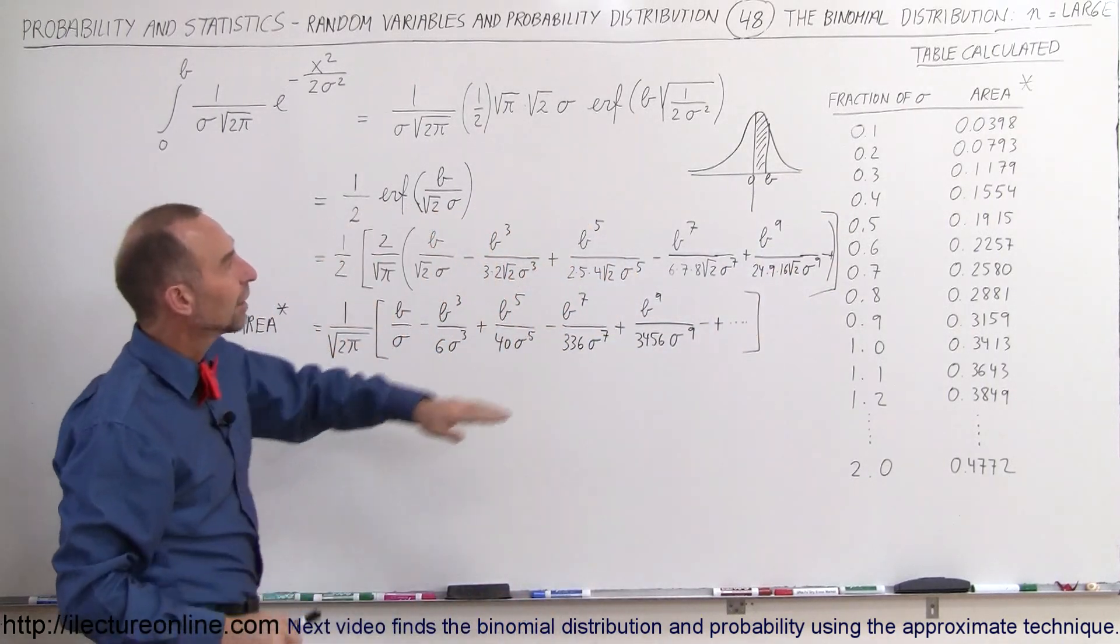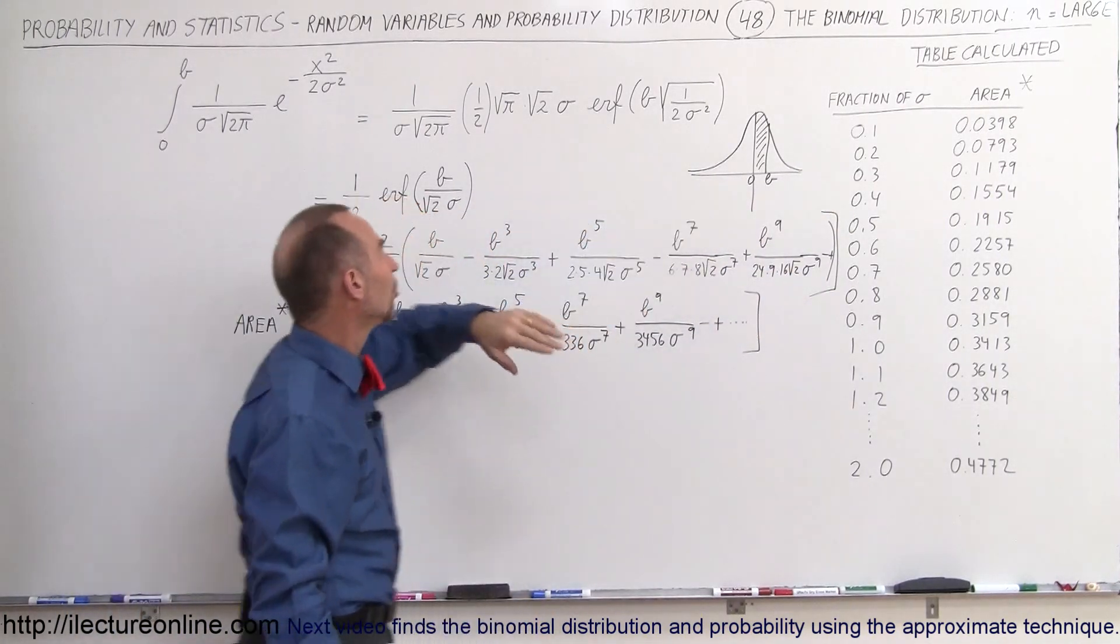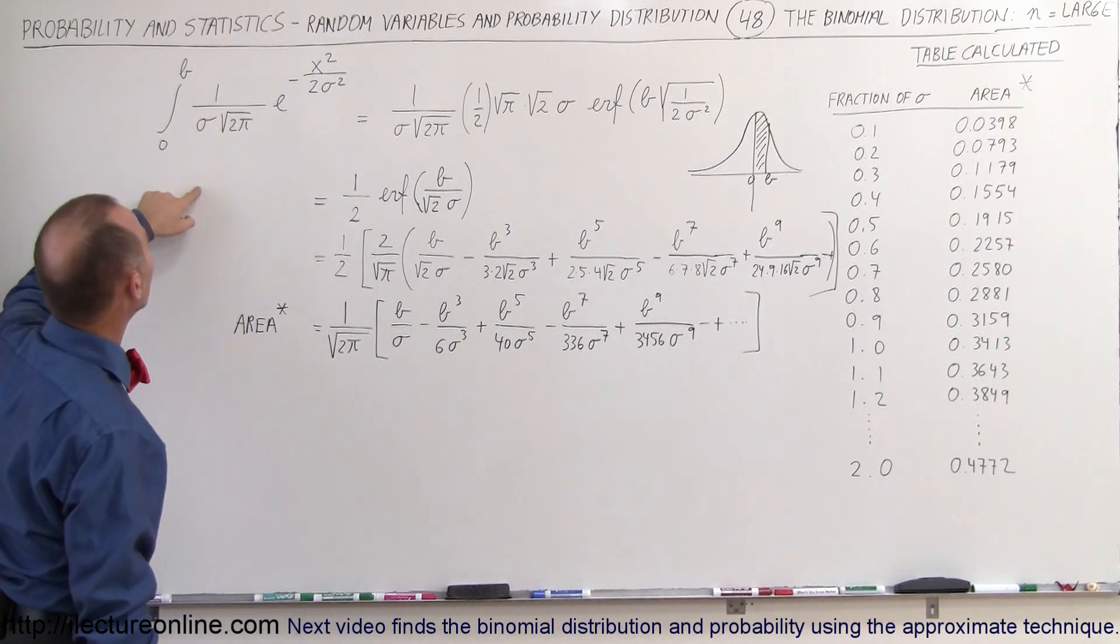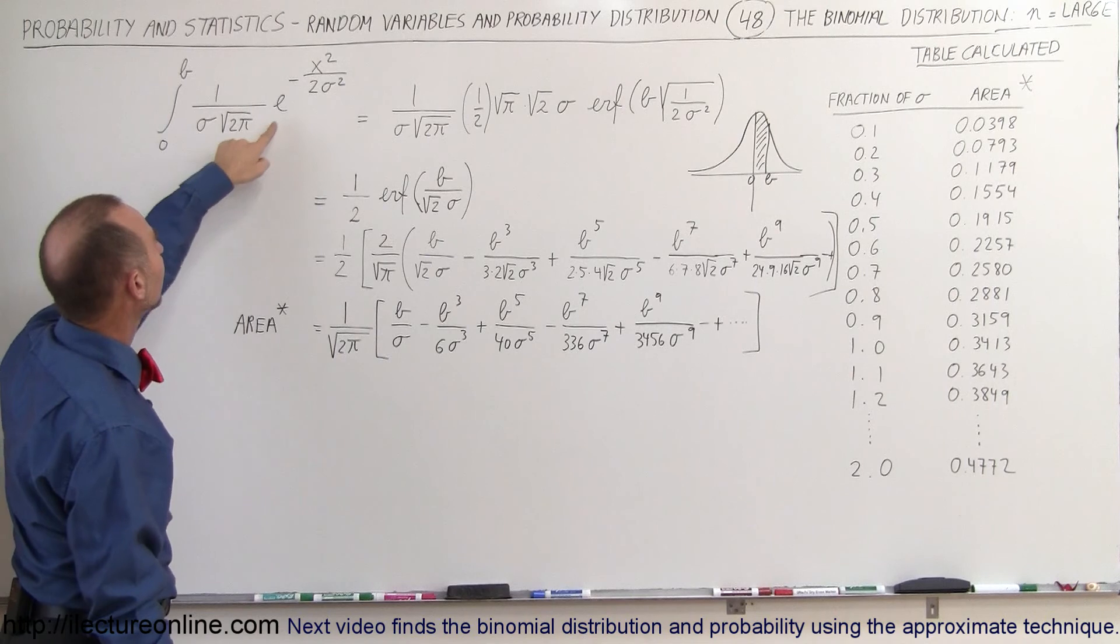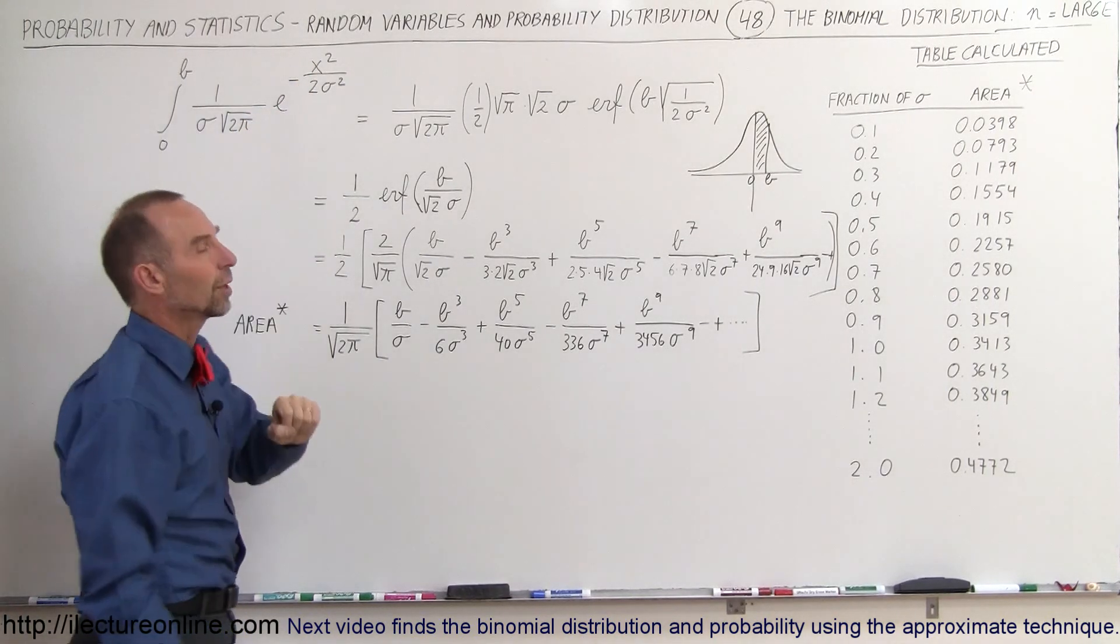The equation that describes this normal distribution is this equation right here. We've seen it before. It's equal to one over sigma times the square root of two pi times e to the minus x squared divided by two sigma squared.